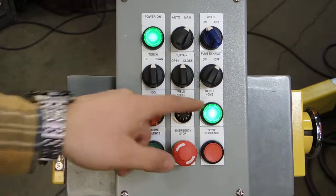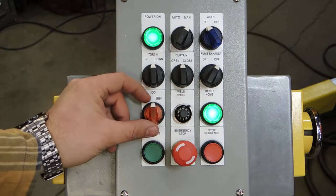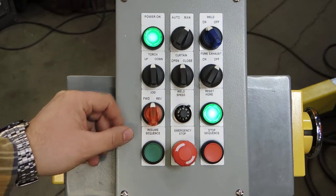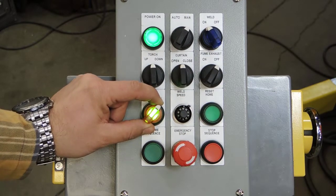In manual mode, you'll notice that our home light is lit and that's a dual function button. If we are in manual mode as we are here and we jog reverse, our home button is now out of position.